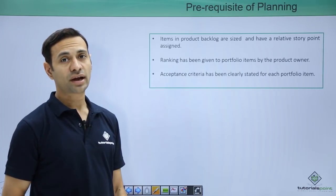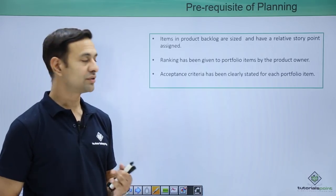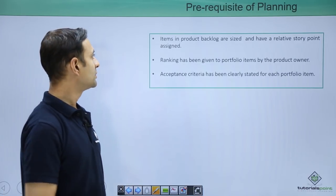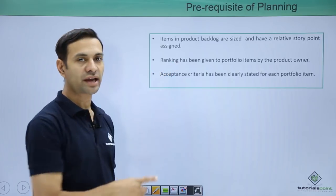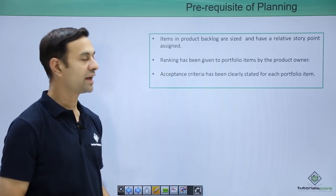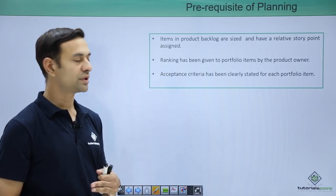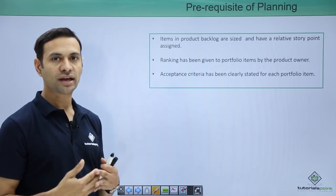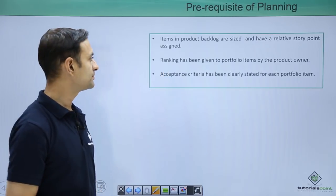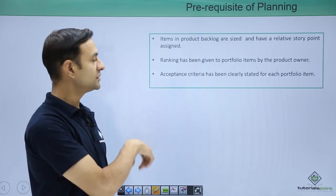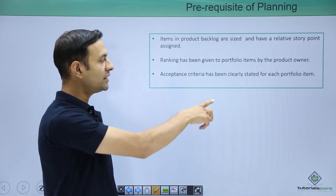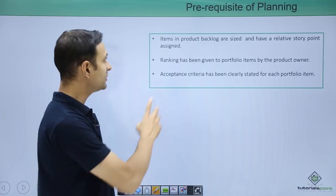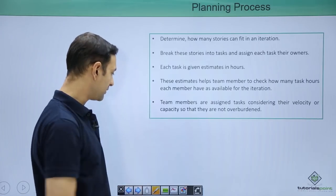Pre-requisites of planning: what should be done before planning. Items in the product backlog should be sized properly and have proper story points assigned to them. Ranking should be given to portfolio items from higher to lower, which should be done by the product owner. Acceptance criteria should be clearly stated for each portfolio item. These were the prerequisites of planning.